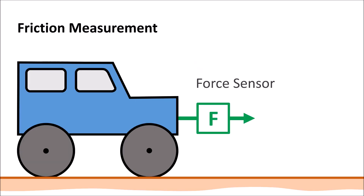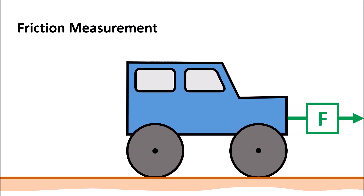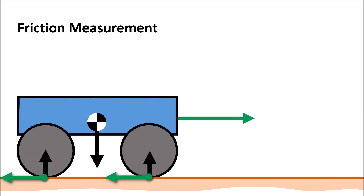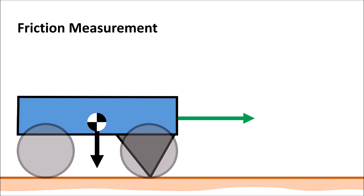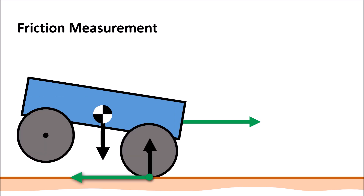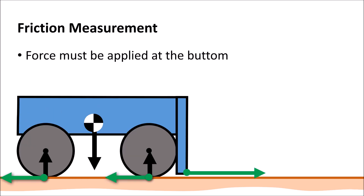When pulling at the object while measuring the stiction or friction force, the pulling force has to be applied close and parallel to the ground to avoid affecting the normal forces.